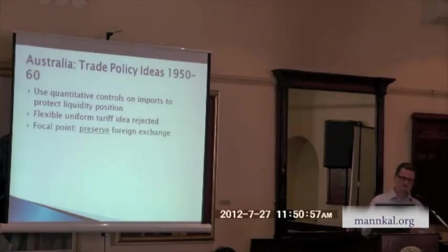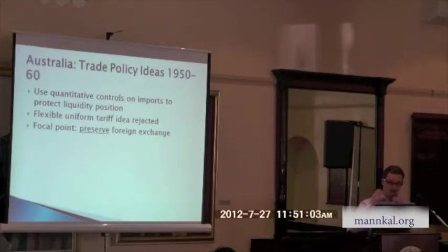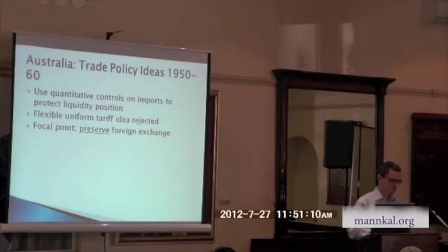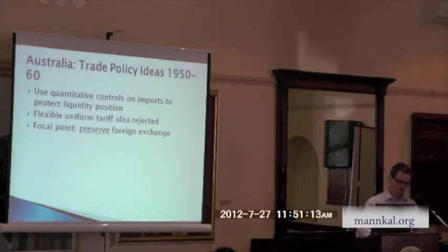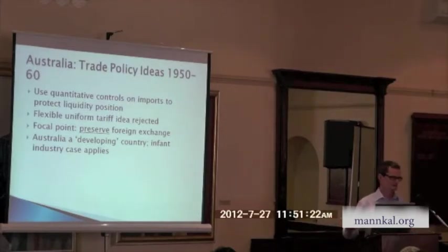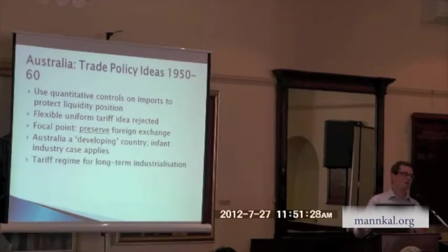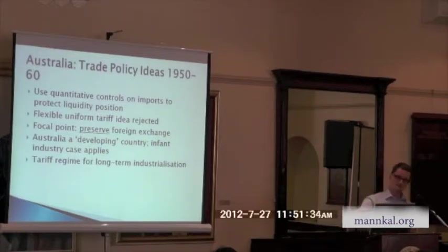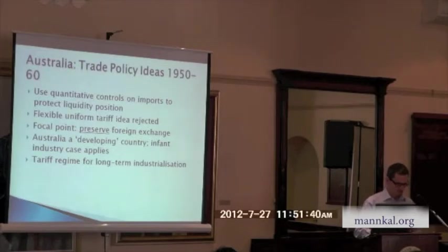The focal point in the 1950s was to preserve foreign exchange, not create more foreign exchange by expanding and diversifying exports. The basic idea was to preserve foreign exchange and then deal with the long-term problem by substituting domestic production of manufactured goods for imports. Australia after all was considered a developing country — this was the consensus view. So the infant industry case applied, and was used in official deliberations. The tariff regime was high, declining somewhat, but overall a fairly high tariff regime was deemed necessary for long-term industrialisation.